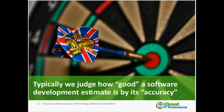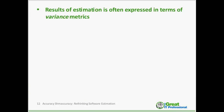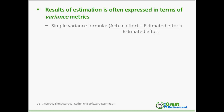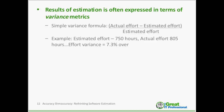It's how close was our original estimate to the actual result. There are a couple of ways to measure that. One is estimation variance — a simple formula: actual effort minus estimated effort, divided by estimated effort. For example, if our estimated effort was 750 hours and we completed the job in 805 hours, our effort variance is 7.3 percent over our estimate.